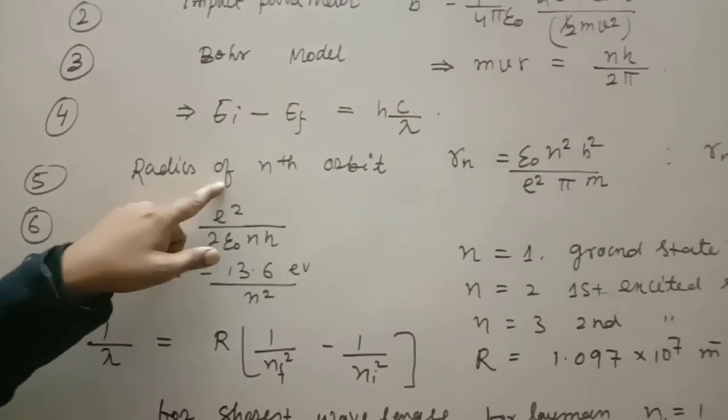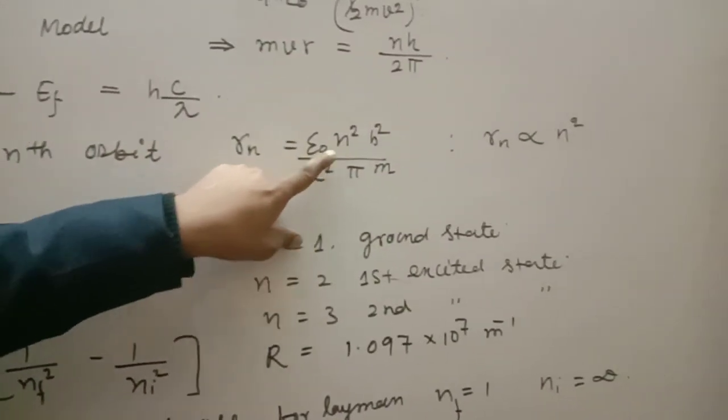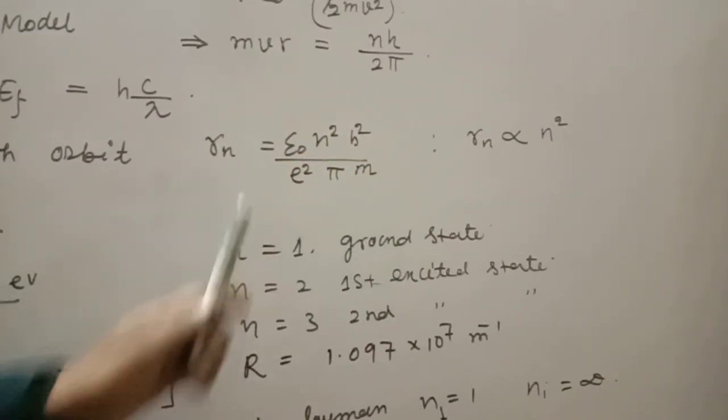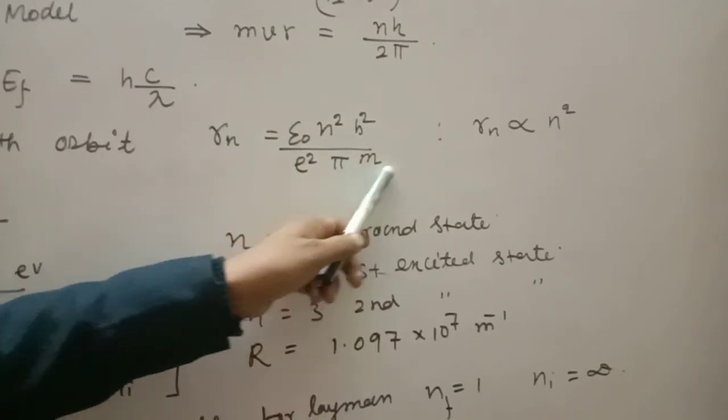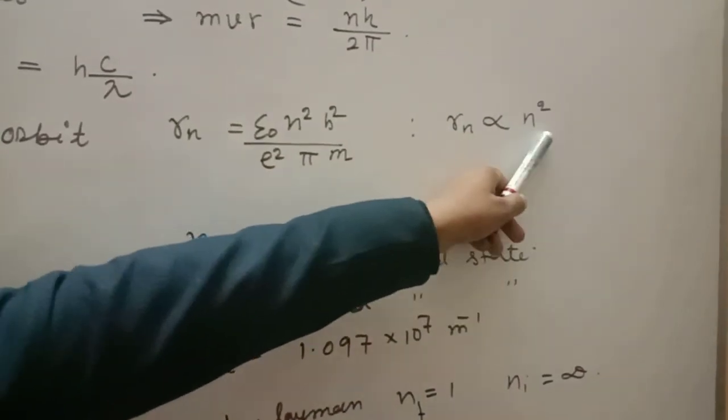First, radius of the nth orbit: rn is equal to epsilon naught n square h square by e square π m. rn is directly proportional to n square.